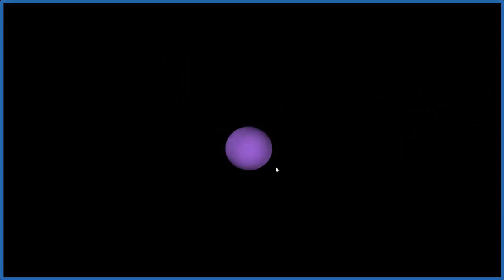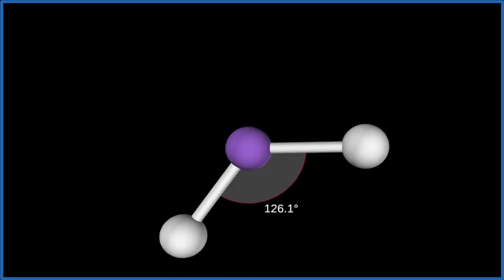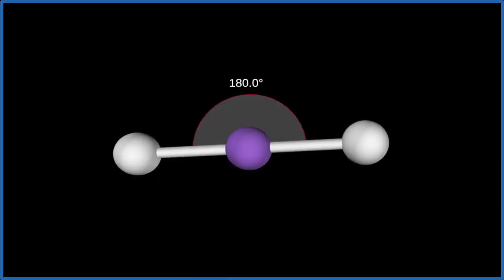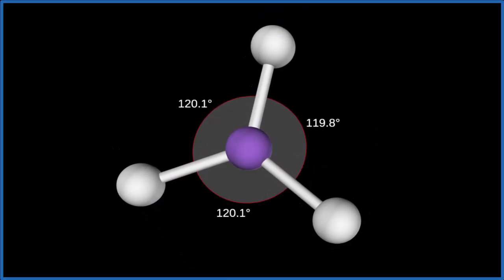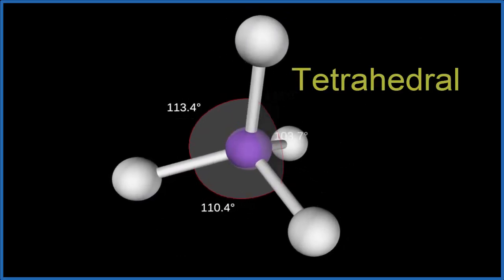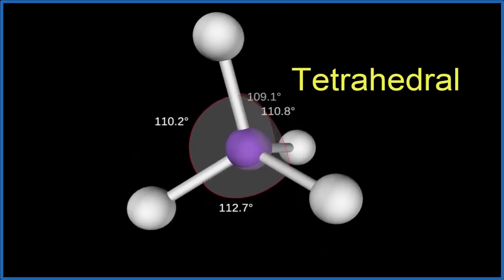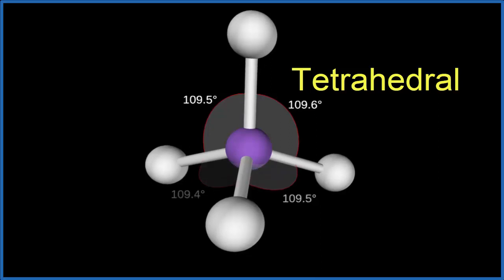So the purple, that's the central phosphorus atom. Let's add four chlorine atoms. One, two, you see they spread out to be as far away as they can from each other. Three, and finally four. And we end up with what's called a tetrahedral molecular geometry. And the bond angle between these atoms is 109.5 degrees.